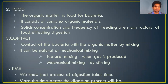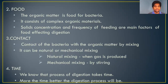The next point is food. Organic materials act as the food for the bacteria, and they consist of complex organic materials. Biodegradation mainly happens in two surroundings: natural surroundings or artificial surroundings such as in biogas plants. The properties of food which affect biodegradation are the solid concentration — the amount of solid contents in the food — and the frequency of feeding, which is the time gap at which we supply waste materials to the plant.